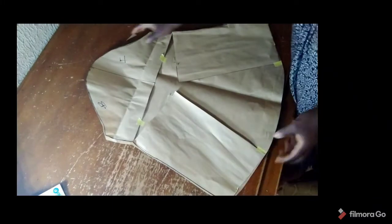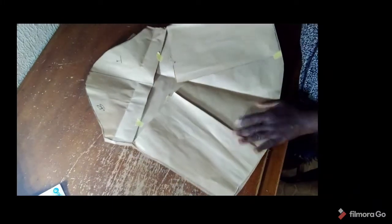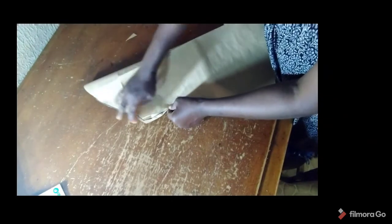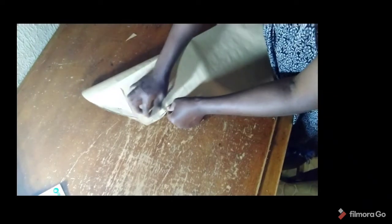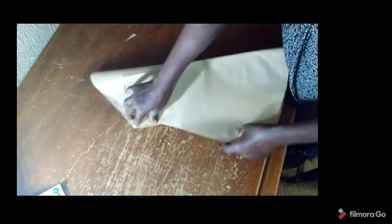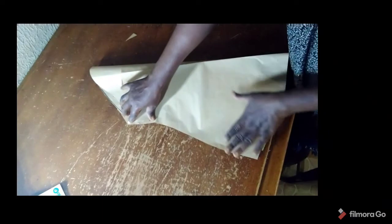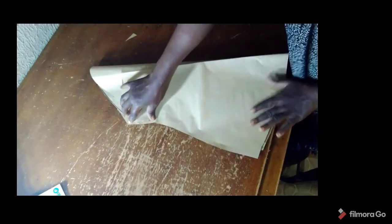So here is our sleeve. Very easy to make. All you need is to practice. If you look at it, you discover that from here to here is fitted, while we now have a fuller, flared section at the down part. This is just the simple way of making this type of bell sleeve.